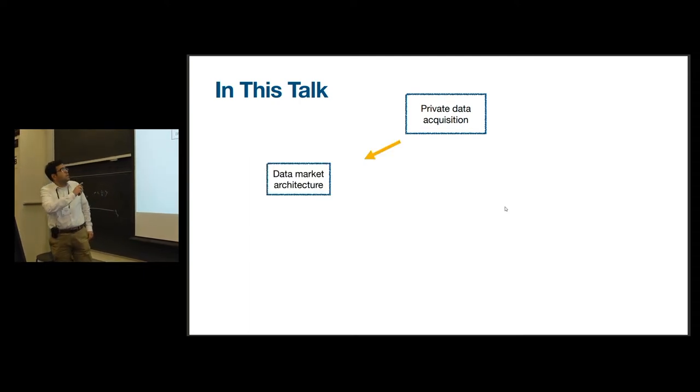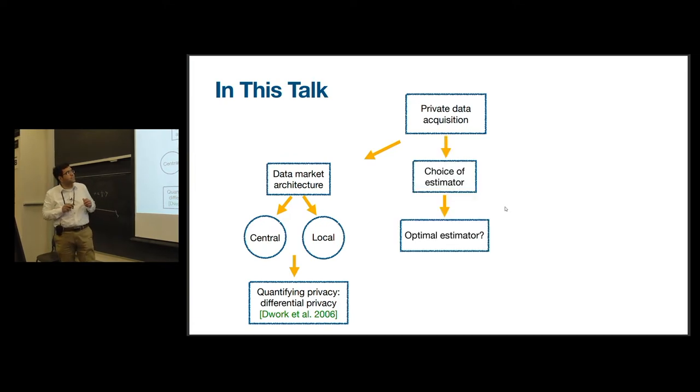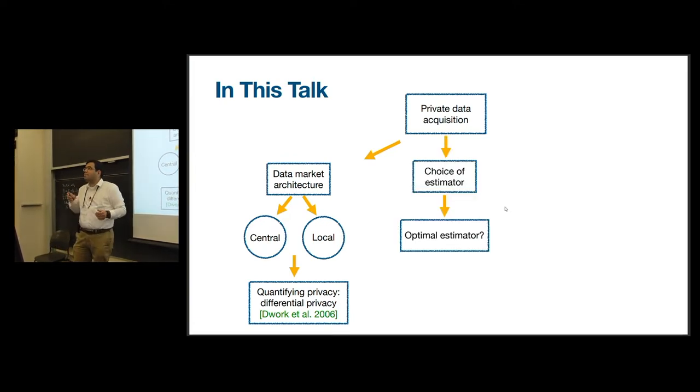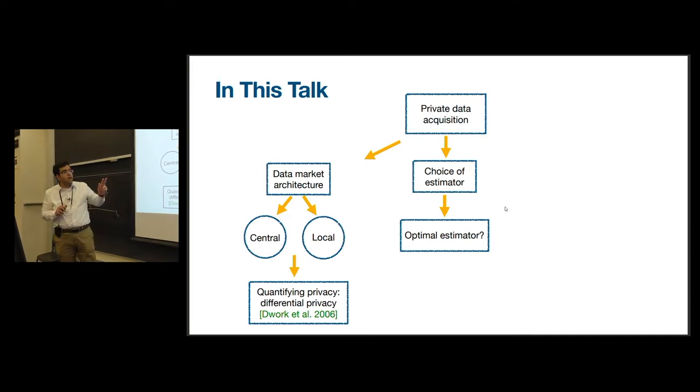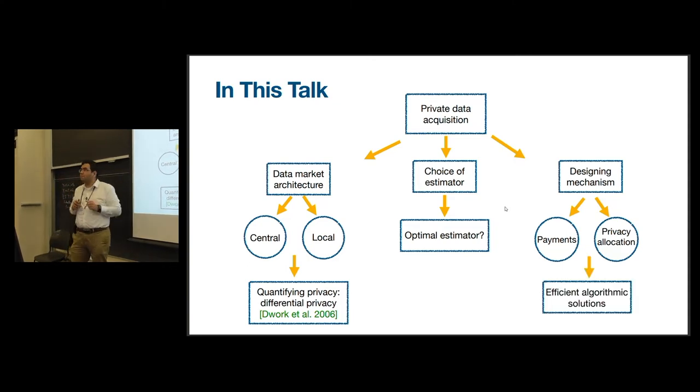We are going to study this problem in this talk. In particular, we are going to start by talking about the data market architecture when collecting data from privacy-sensitive users. We propose two different architectures, central and local. We use the differential privacy framework to quantify privacy loss in both architectures. Next, we talk about the choice of estimator on the platform side. Finally, we talk about designing a mechanism that decides on privacy allocation and payments when users have different privacy requirements. We provide efficient algorithmic solutions to solve the mechanism design problem that we pose.